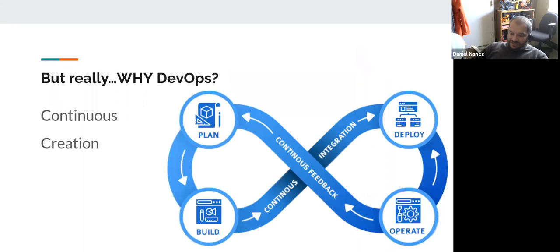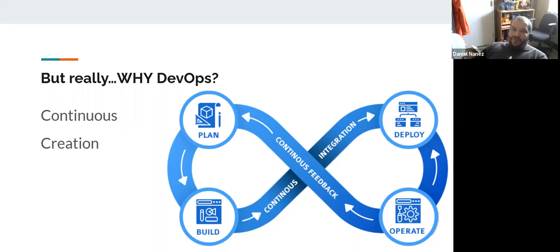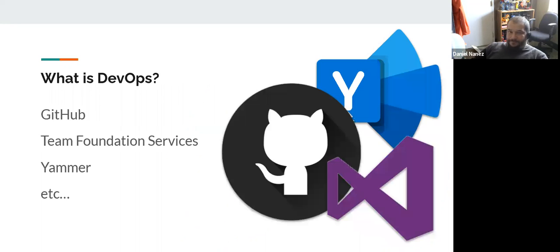That's why DevOps becomes important — that model of how to build a site or work through a project changes. Instead of that waterfall-esque step-by-step process, you now have the ability to continually add, create, and develop. You're not limited to one person or one stage. When you have three or four different people putting in their components and pieces, it leads to a continual creativity cycle — you're no longer waiting for somebody else to do their job.